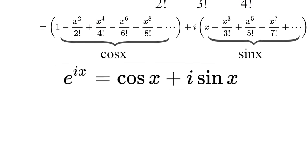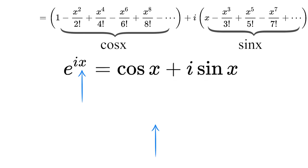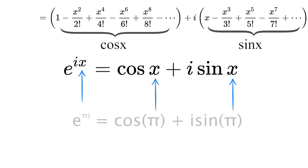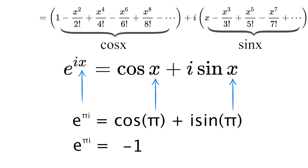If you put in pi for x, you get e to the pi times i equals cosine of pi plus i times sine of pi. Cosine of pi is negative 1. Sine of pi is 0, so that term goes away. And we get that identity from before — so now you know where that comes from. That's an overview of a proof for Euler's formula.